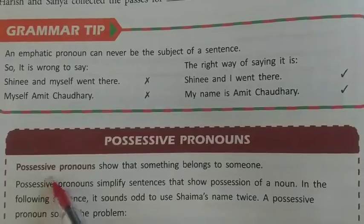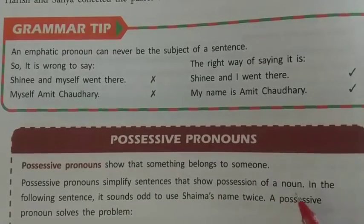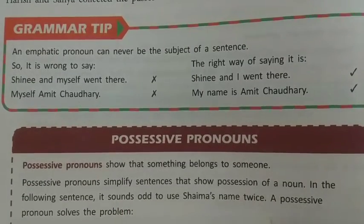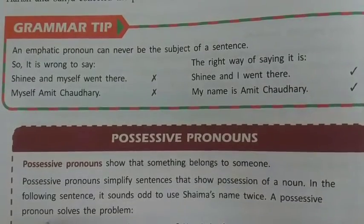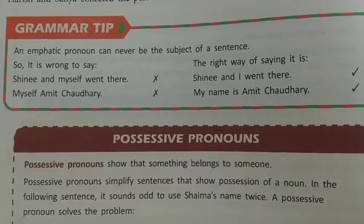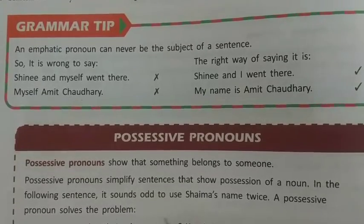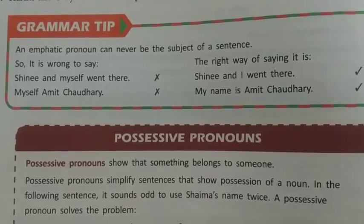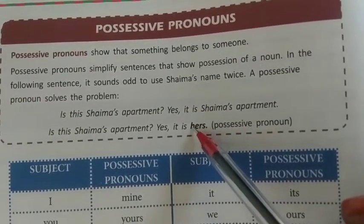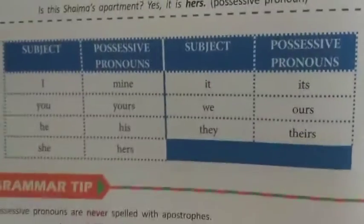Possessive pronoun. A possessive pronoun shows that something belongs to someone and simplifies sentences that show possession of a noun. For example: 'Is this Shema's apartment?' - 'Yes, it is Shema's apartment' sounds repetitive. Using a possessive pronoun: 'Yes, it is hers.' यहाँ 'hers' उसका possessive pronoun है जो Shema's apartment का possession indicate करता है।